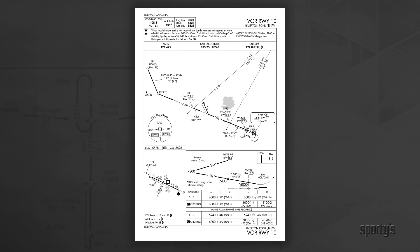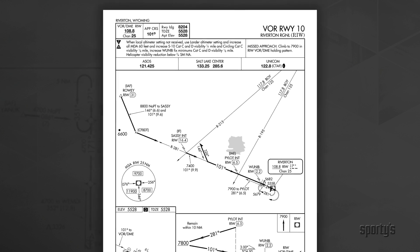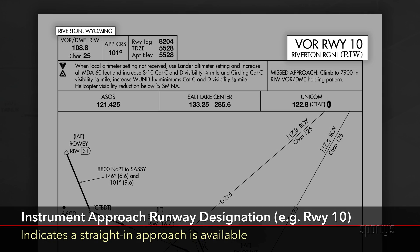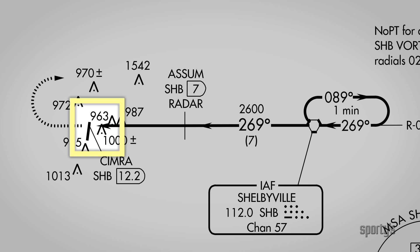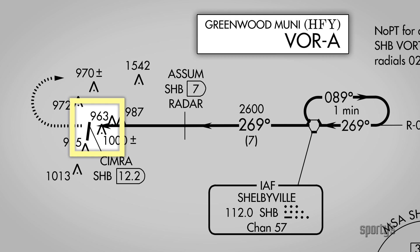Let's look at the chart for the runway 1-0 VOR approach at Riverton, Wyoming. Top and bottom left margins show the city and state, and the approach runway number and airport name are on the right. If the approach is not straight into a runway, the approach is identified by a letter, like the VOR Alpha at the Greenwood Municipal Airport in Indiana.